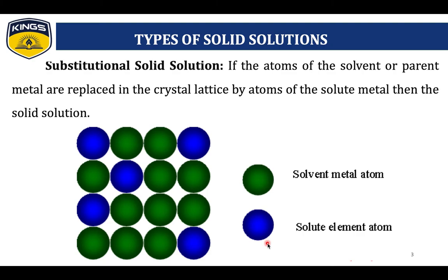Coming to Substitutional Solid Solution — just as a substitute for an atom — if the atoms of the solvent or parent metal are replaced in the crystal lattice by atoms of the solute metal, then that solid solution is said to be a Substitutional Solid Solution.